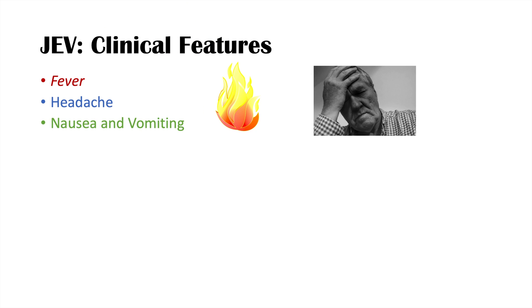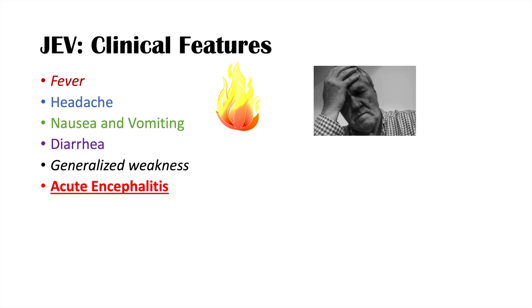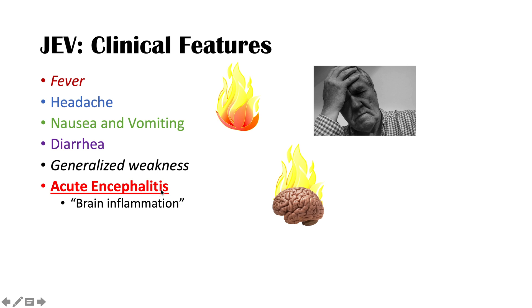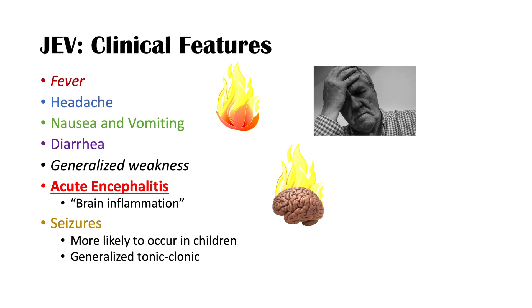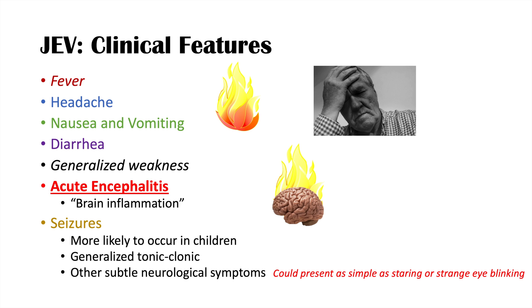Fever is the first clinical feature, followed by headaches and gastrointestinal symptoms like nausea, vomiting, and diarrhea. Generalized weakness can also occur. This can all progress to acute encephalitis — brain inflammation — which presents as fever, headache, and altered mental status. Some individuals can also have seizures, more commonly in children, and these can be generalized tonic-clonic seizures where the person falls to the ground and shakes all their limbs.